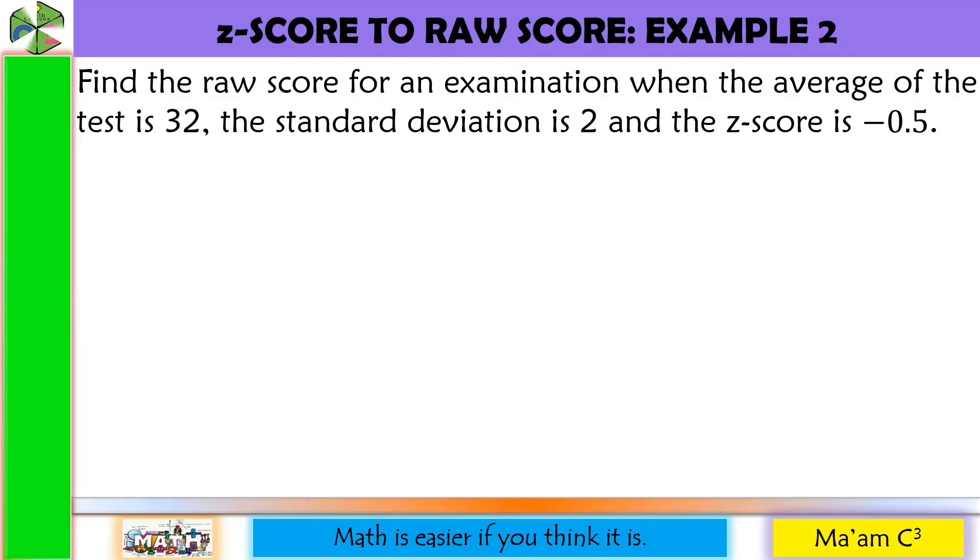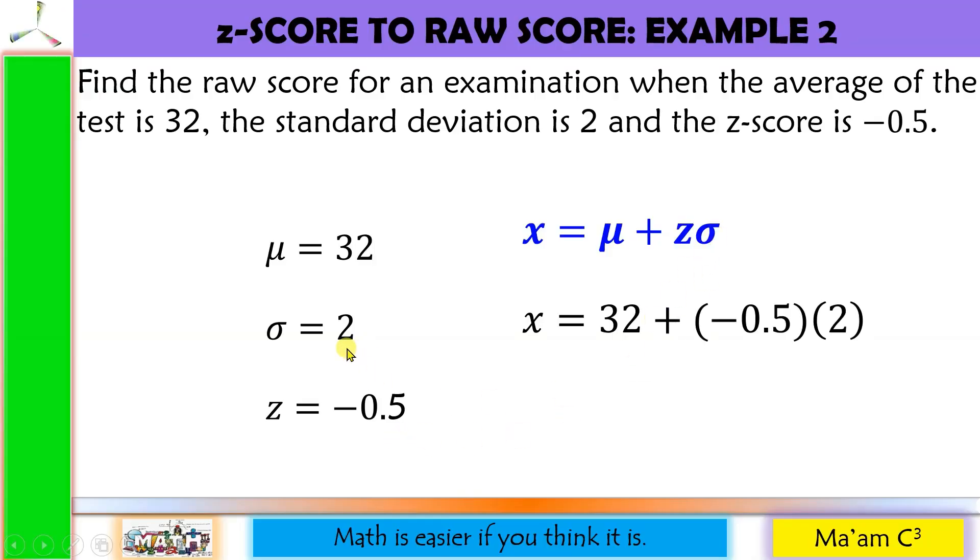Another one, find the raw score for an examination when the average of the test is 32, the standard deviation is 2, and the Z-score is negative 0.5. So again, let us identify first the average and that will be 32. The standard deviation is 2, so sigma is equal to 2, and the Z-score is negative 0.5. Our formula is X equals mu plus Z times the sigma. So our mu is 32 plus our Z is negative 0.5 multiplied by our sigma, which is 2. And this will give us 31.